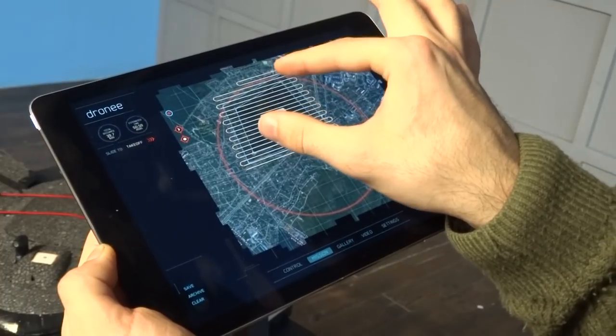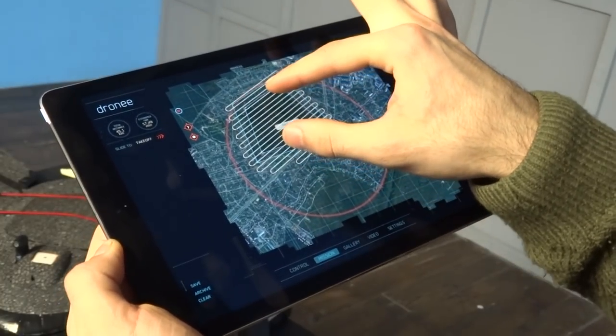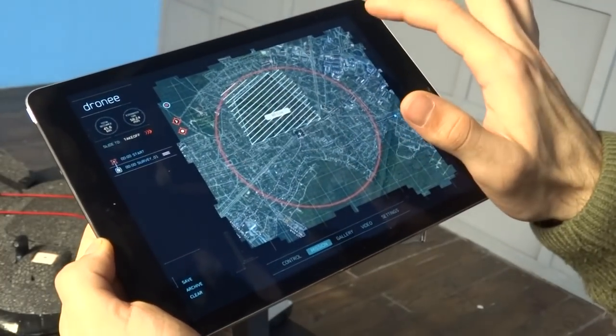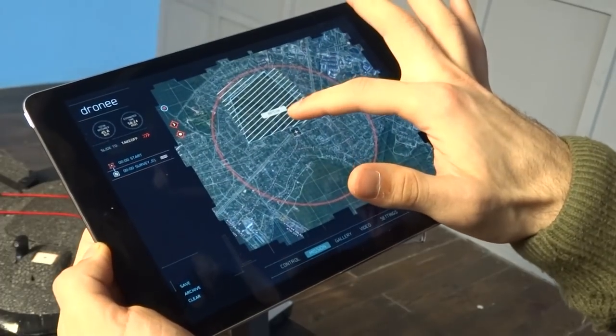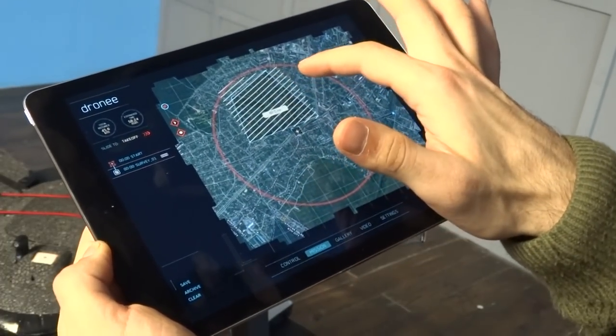If you want to change the direction of the flight path, hold both fingers on the screen and rotate it. Tap one more time to the empty space. Now you have a survey mission.